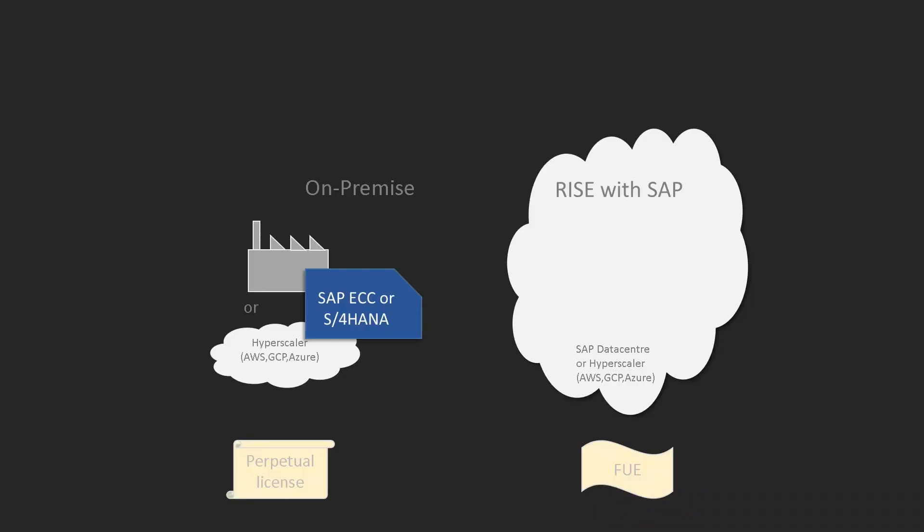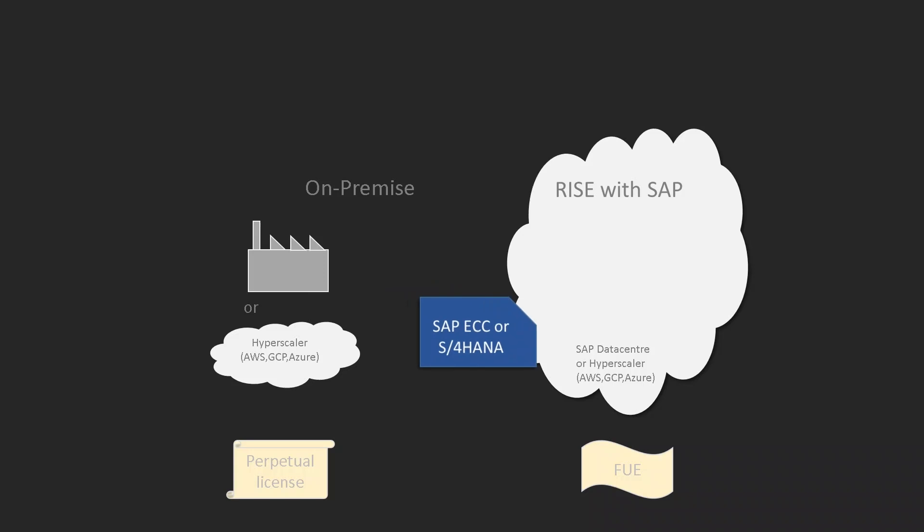Let's imagine that you have an existing SAP ERP or S4HANA system and it is installed in your own data center or in your chosen hyperscaler, for example Azure, AWS or GCP. This is what we call an on-premise system because it is using an on-premise SAP license model, also known as a perpetual license.